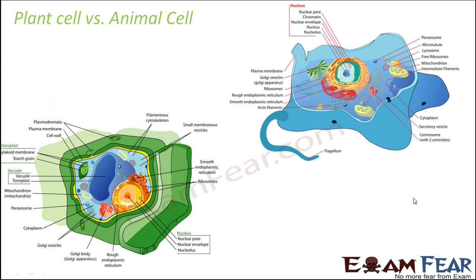This is how plant cells and animal cells look different from each other. Since we have already studied each cell organelle in detail, you can use the diagrams for reference and revision — picking any organelle and recalling its function and structure. With this we end our discussion on eukaryotic cells, having covered most of the chapter. Next we will talk about prokaryotic cells.